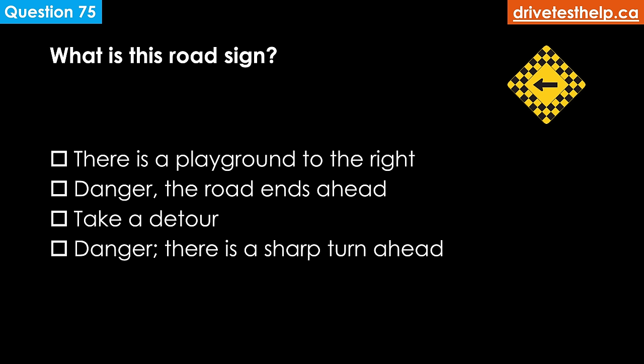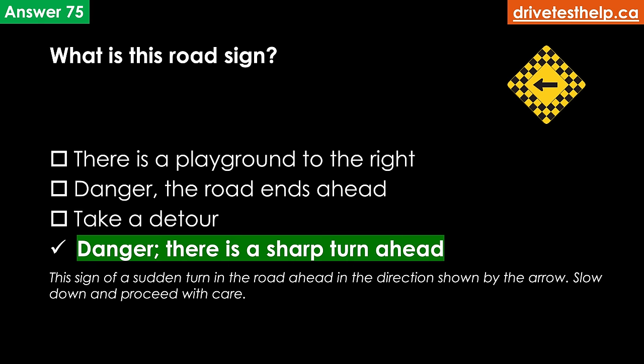What does this road sign mean? Options: there is a playground to the right; danger; the road ends ahead; take a detour. The correct answer is danger — there is a sharp turn ahead. This sign warns of a sudden turn in the road ahead in the direction shown by the arrow. Slow down and proceed with care.